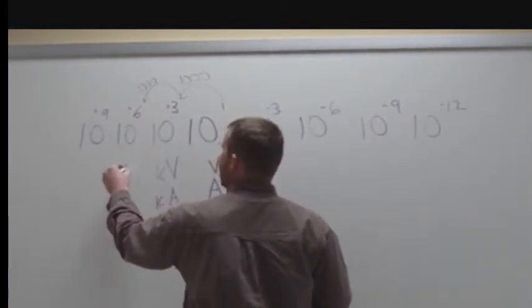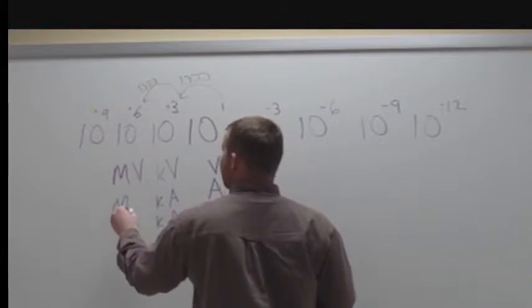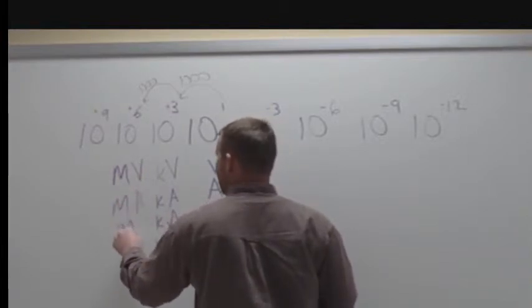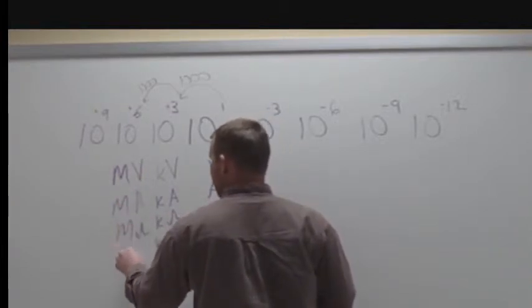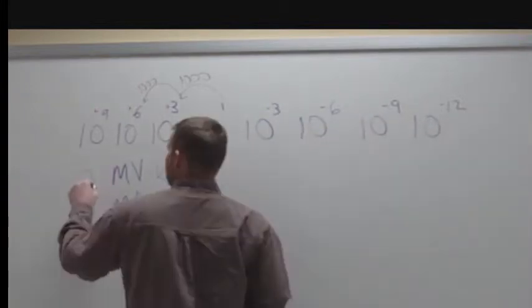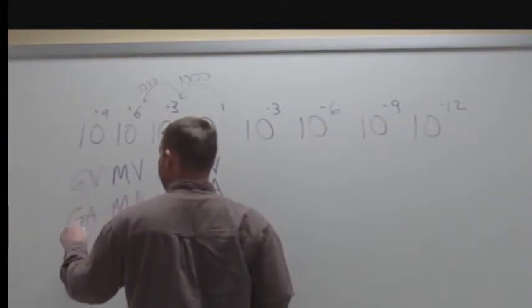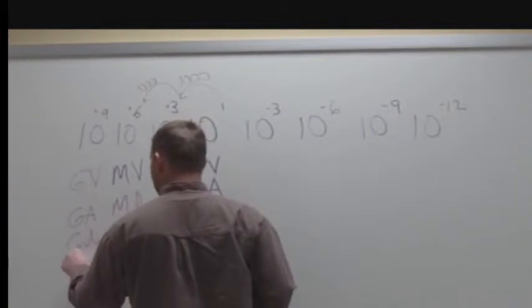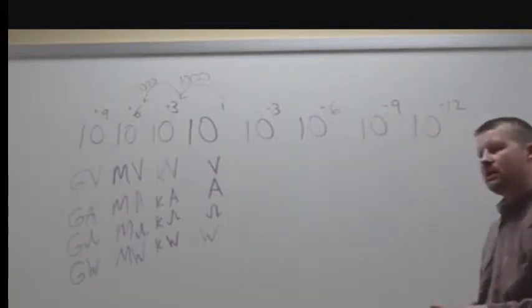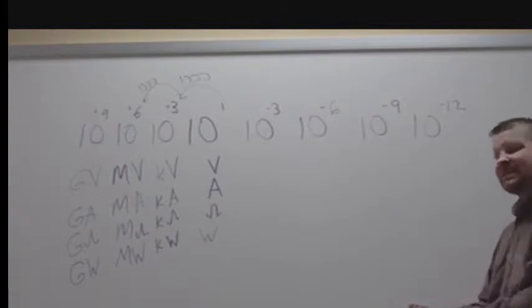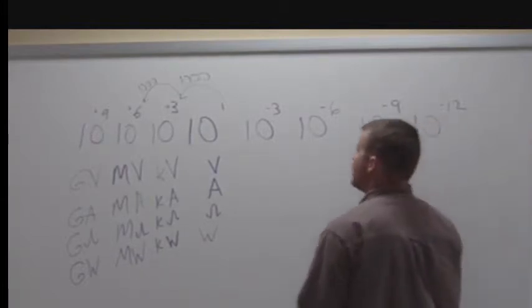Mega-volt. Mega-amp, mega-ohm, and mega-watt. 10 to the ninth is giga. Gigavolt, giga-amp, giga-ohm, and gigawatt. All right. Let's go to the minuses. Less than the zero category to see what we've got.